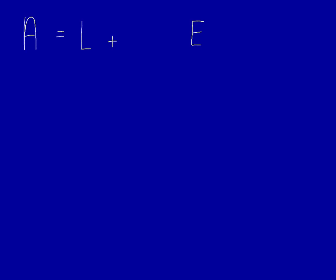Let's start with the basic accounting equation. Assets, which are owned by the corporation, are equal to liabilities, which are owed to third parties, plus equity, which is owed to the owners. Equity represents the wealth that the corporation owes to the owners. In introductory financial accounting, equity is made up of two things: contributed capital and retained earnings.